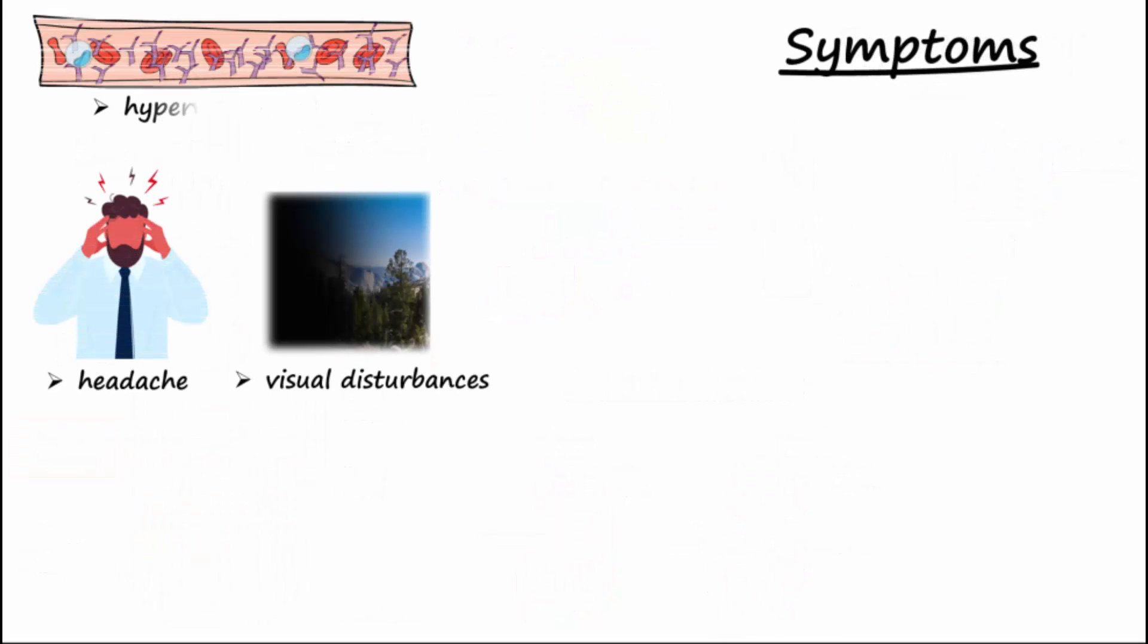Headaches and visual disturbances may be from hyperviscosity of the blood. Remember the blood is extra thick or hyperviscous because of dysfunctional antibodies produced by the plasmacytomas.